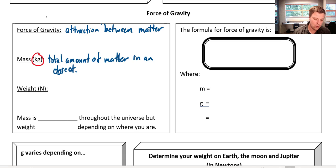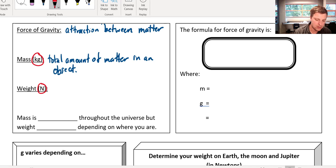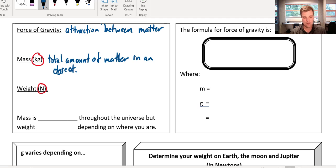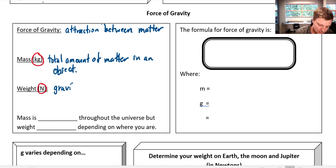When we contrast that with weight, weight is measured in newtons. So weight is a force and weight is really the gravitational force between two objects.